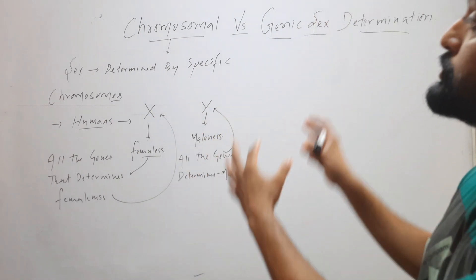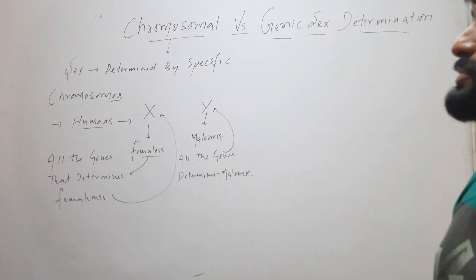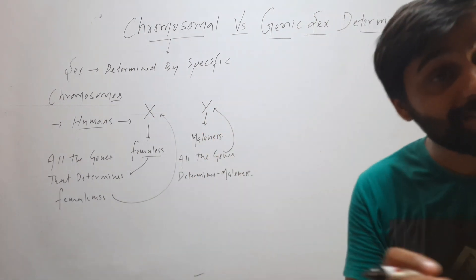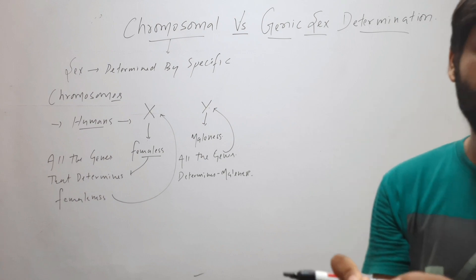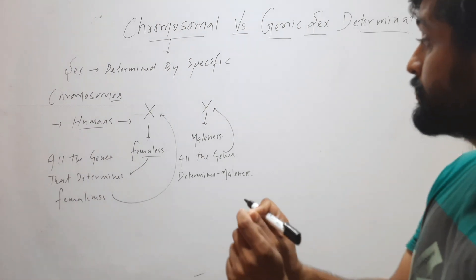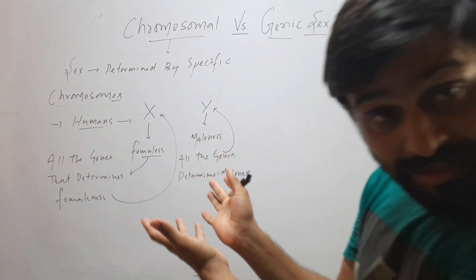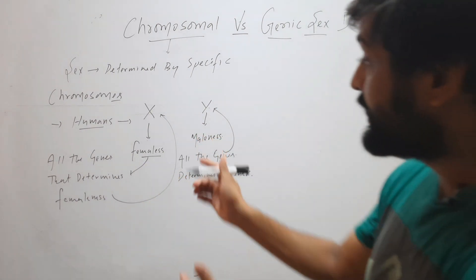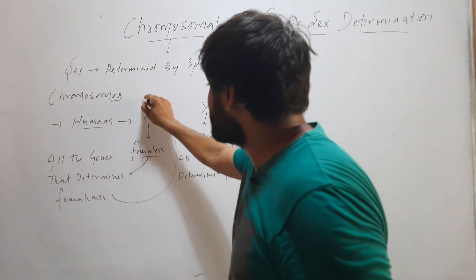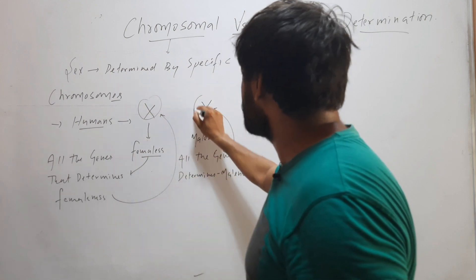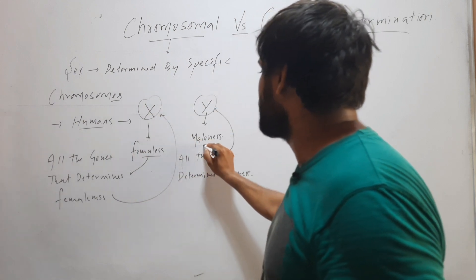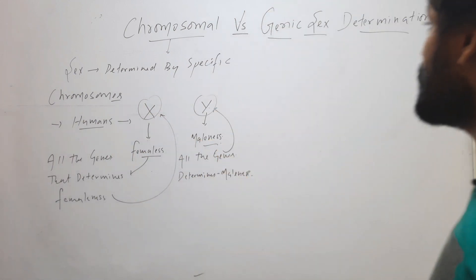In case of chromosomal sex determination, sex is determined by a specific chromosome. For example, in case of humans, X determines femaleness and Y determines maleness.